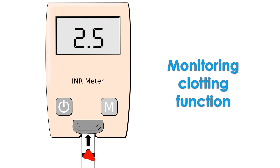A mitral valve which is too damaged to be repaired can be replaced surgically. Both biological bioprosthetic valves and mechanical valves are available. Mechanical valves have a high tendency for clotting and need lifelong medications to prevent clot formation. The clotting function has to be monitored on a regular basis to prevent bleeding and clotting complications. Bioprosthetic valves need clot-preventing medications only for a short period after implantation.